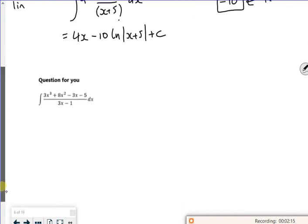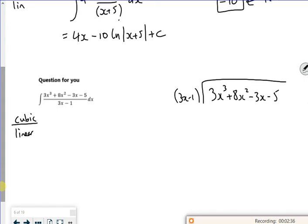So I'm going to do a similar thing with this one, the question for you. So I've got 3x cubed plus 8x squared minus 3x minus 5, all divided by 3x minus 1. And what I'm expecting, I'm doing a cubic divided by a linear.